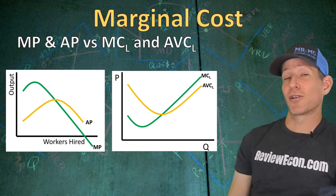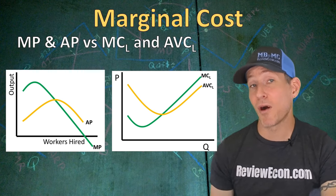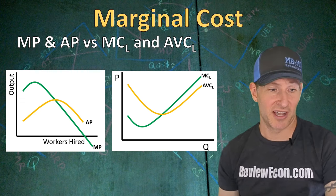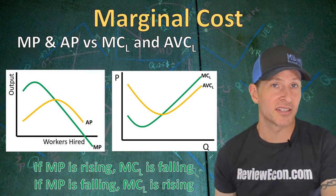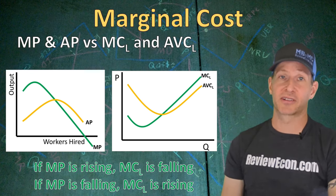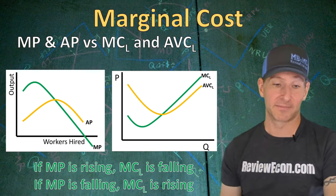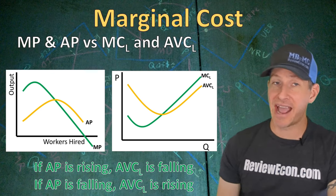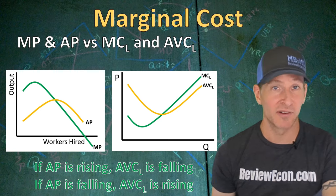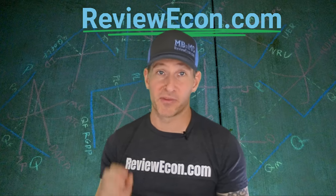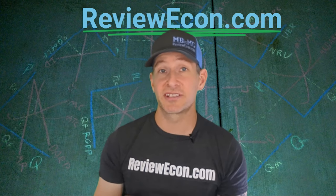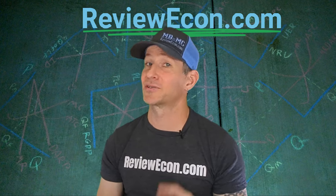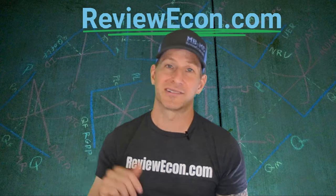Comparing the marginal product and average product curves to the marginal cost of labor and average variable cost of labor curves, we see they are flipped upside-down versions of each other. When marginal product is rising, marginal cost of labor is falling. When marginal product is falling, marginal cost of labor is rising. Likewise, if average product is rising, average variable cost of labor is falling, and if average product is falling, average variable cost of labor is rising. That's what you need to know about the production function. Head over to ReviewEcon.com and pick up the total review booklet for everything you need to ace your microeconomics or macroeconomics exam. That's it for now — I'll see you all next time.